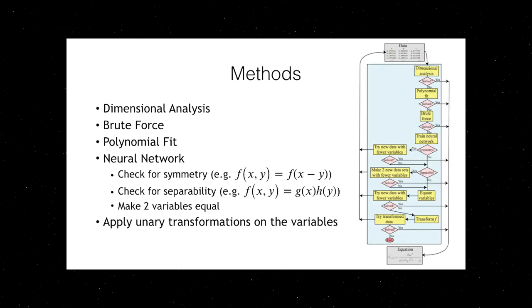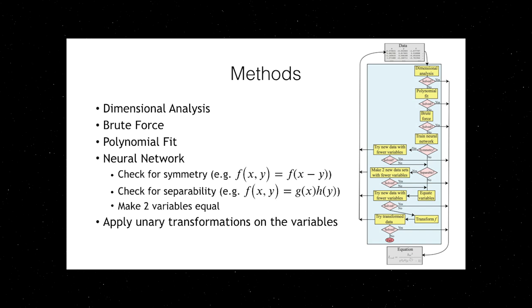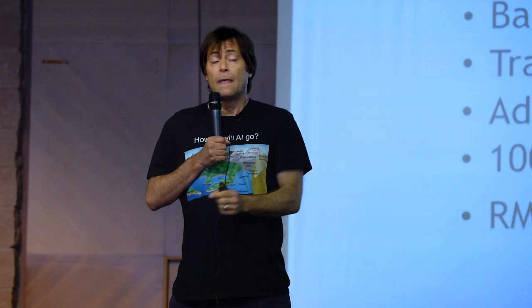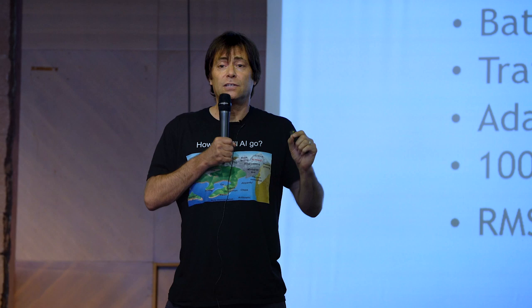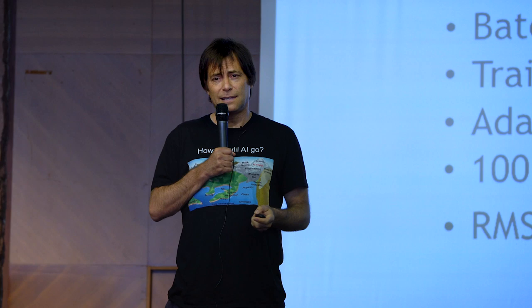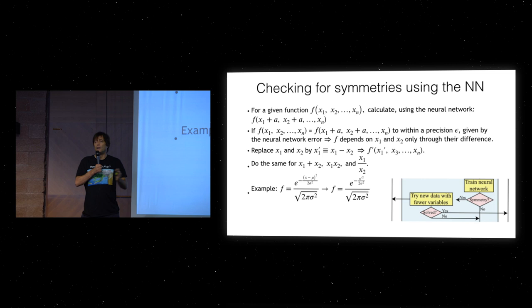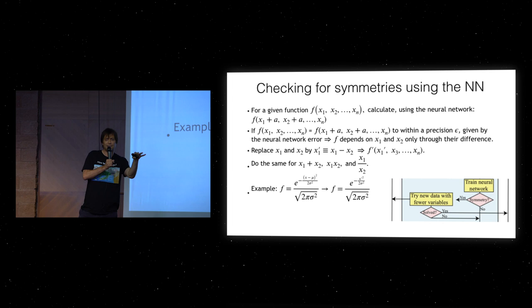The most interesting idea is we train a neural network first to be able to approximate pretty accurately the function. Why is that useful? It's still super hard to look at the neural network and figure out what formula that was, but that gives you the great advantage that now you can generate more data than you were given. You can actually start making little experiments. For example, if you want to know if your function has translational symmetry in two variables, you can try changing two data points by adding the same constant to both and see if that changes anything. Once you discover some simplifying property like that, it simplifies your whole thing.